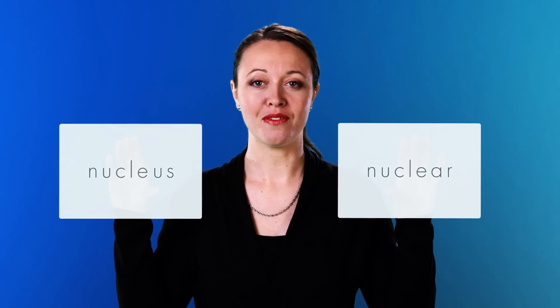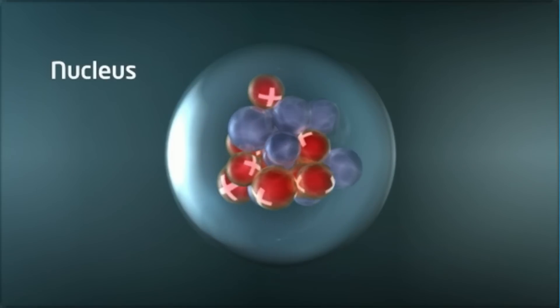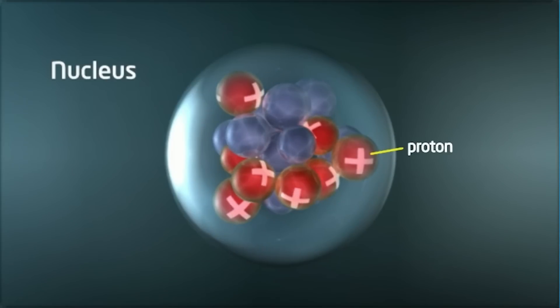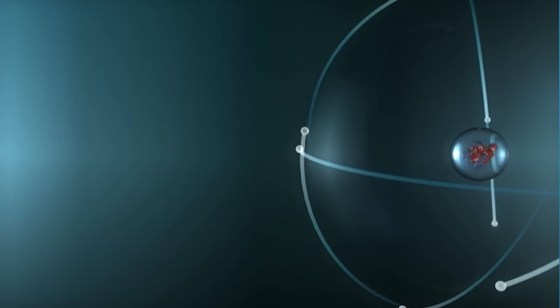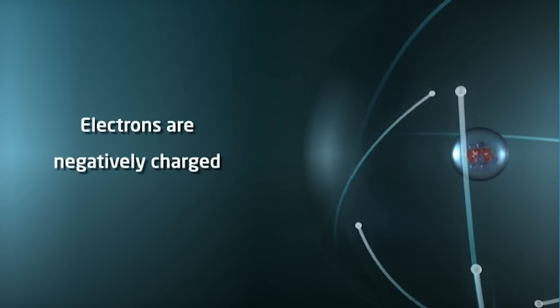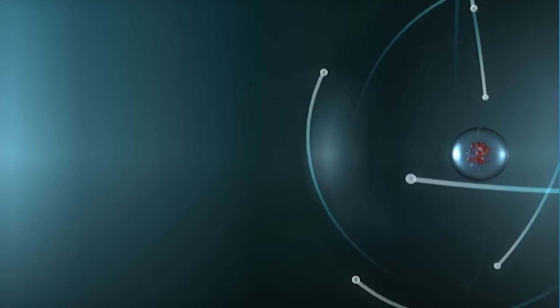The center of the atom is called the nucleus. That's where the word nuclear comes from. There is a tremendous amount of energy inside. The nucleus of an atom is made up of two particles: protons, which carry a positive charge, and neutrons, which have no charge. Outside the nucleus are electrons, which carry a negative charge. The attraction of these negative electrons to the positive nucleus is what keeps the atom together.